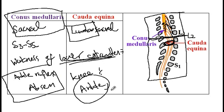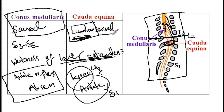The reason is that the ankle reflex corresponds to S1, while the knee reflex corresponds to L4. Since cauda equina syndrome affects both the lumbar and sacral levels, both of these reflexes would be absent. And that concludes our discussion.